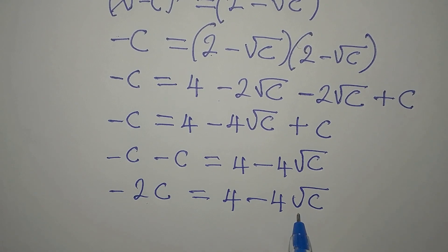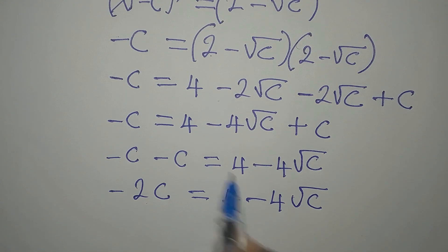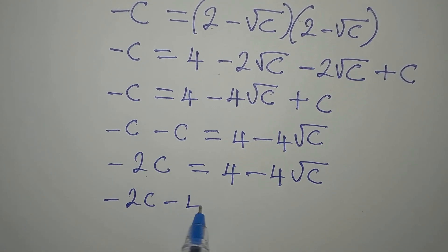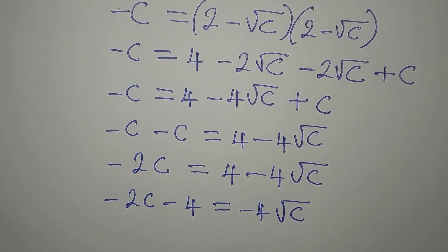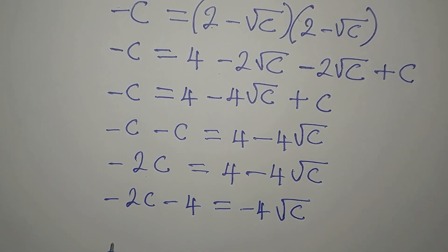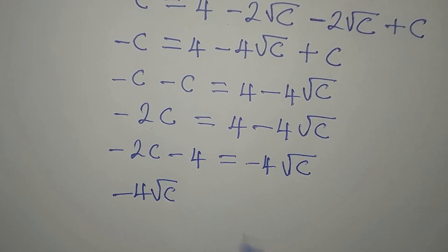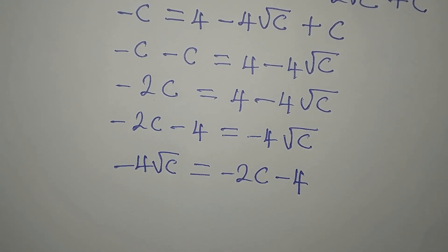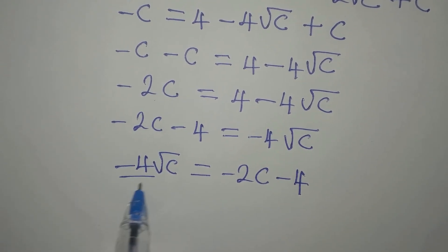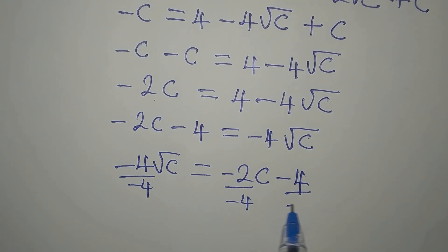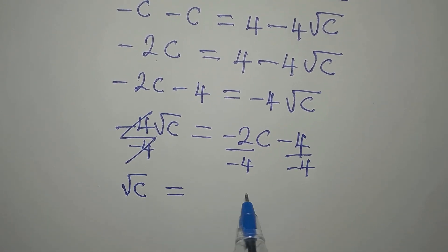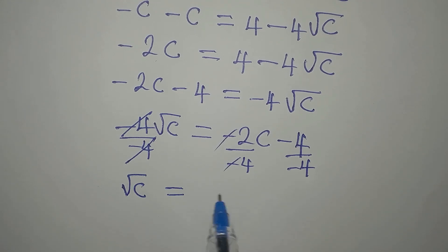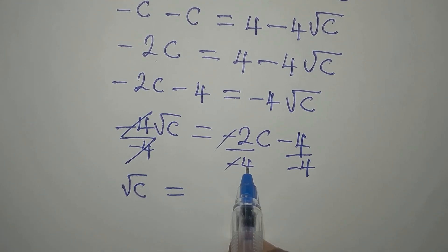What I want to do is to make this one the subject. I will bring this to the left, so I have minus 2c minus 4 equals minus 4 root c. I want to write this one first: minus 4 root c equals minus 2c minus 4. Then I can divide both sides by minus 4. This is going with this. So root c is equal to — negative can take this out — 2 divided by 2 is 1 and 4 divided by 2 is 2.